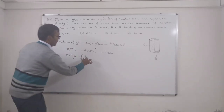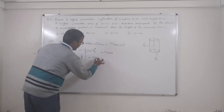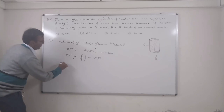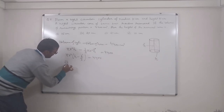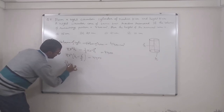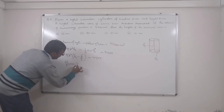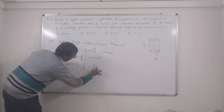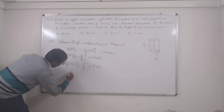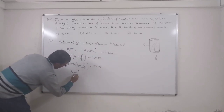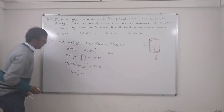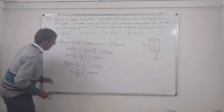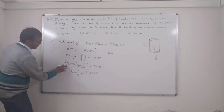We can factor out πr² to get πr²(h − h'/3) = 4400. Substituting π = 22/7 and r = 10: (22/7) × 10 × 10 × (h − h'/3) = 4400, which simplifies to h − h'/3 = 14.